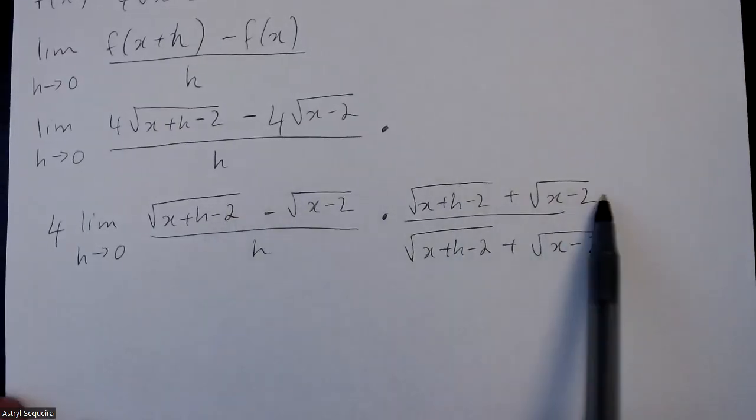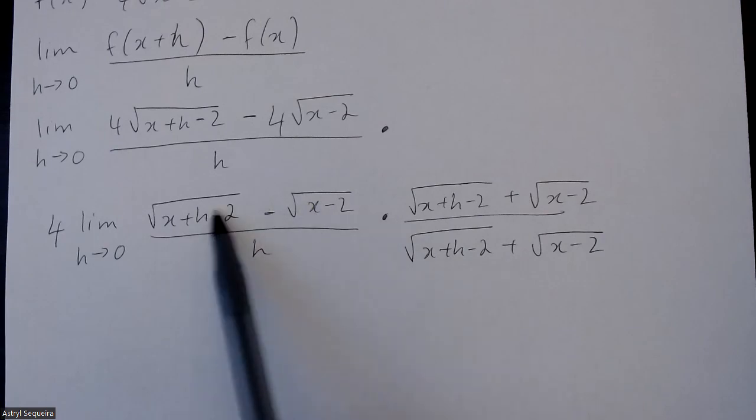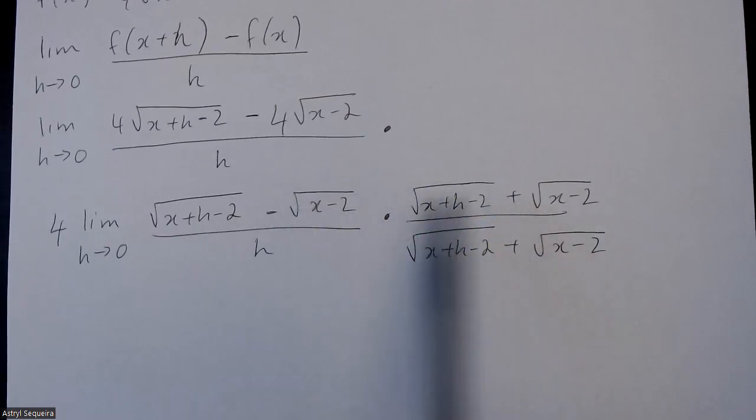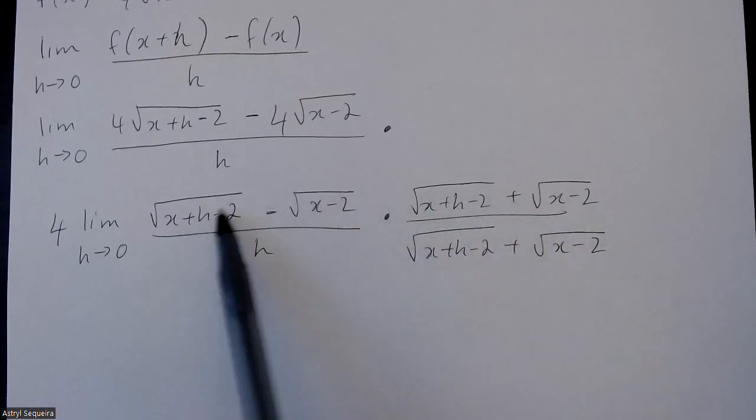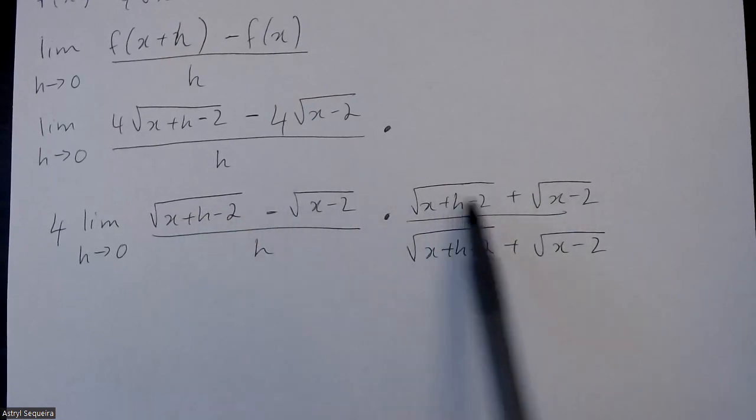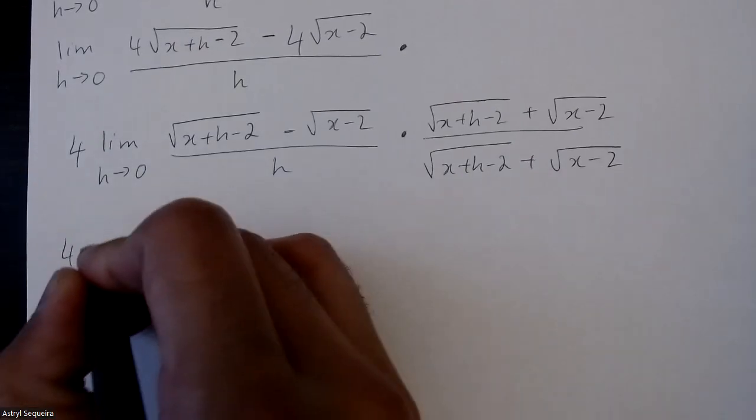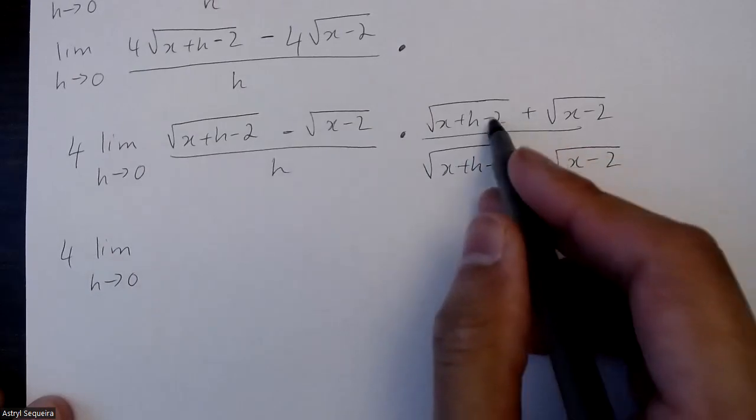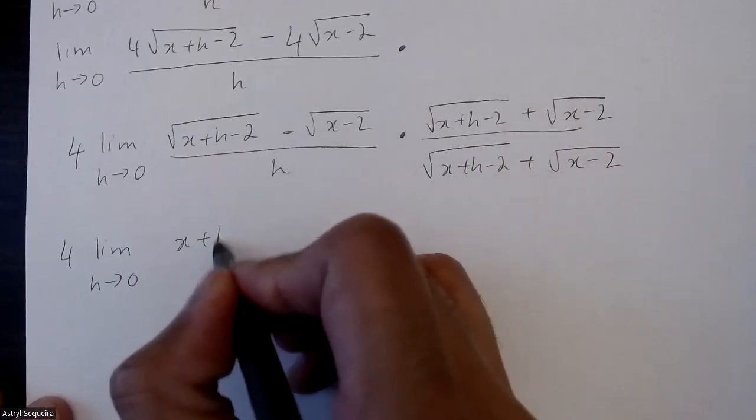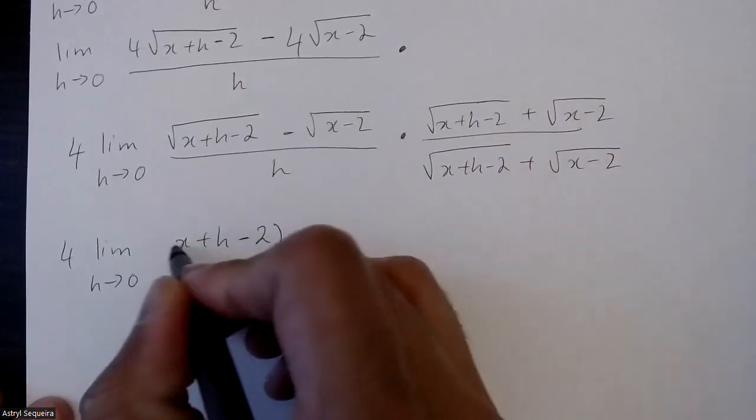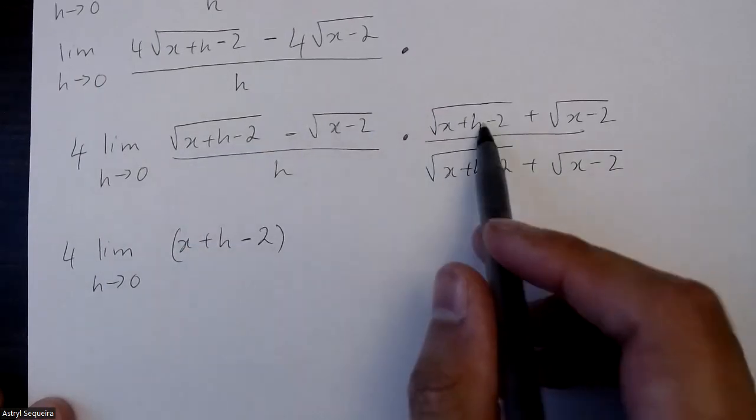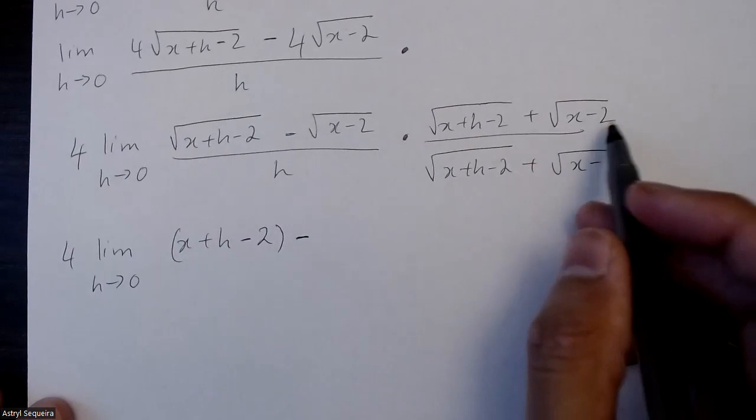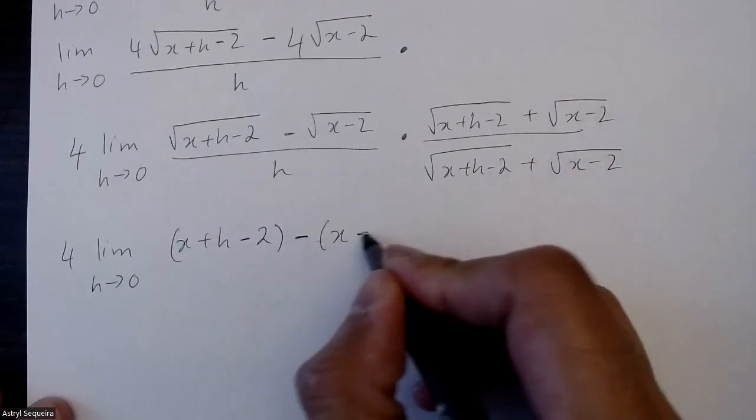And now you're going to expand out the top using FOIL, but the middle two terms will always cancel each other out, and that's because we rationalized. So this is just a difference of squares, so I'm just going to do the first term times the first term. So that's this times this, which is just x plus h minus 2. The square root of something multiplied by itself is the exact same thing without the square root. And this times this is just x minus 2.